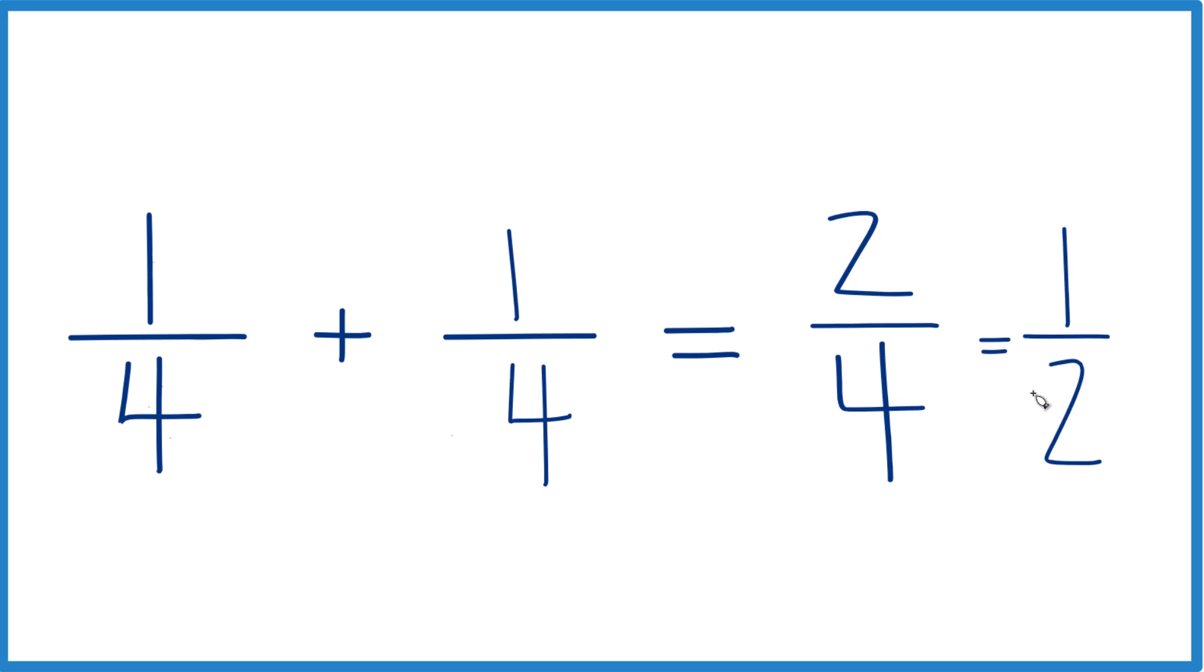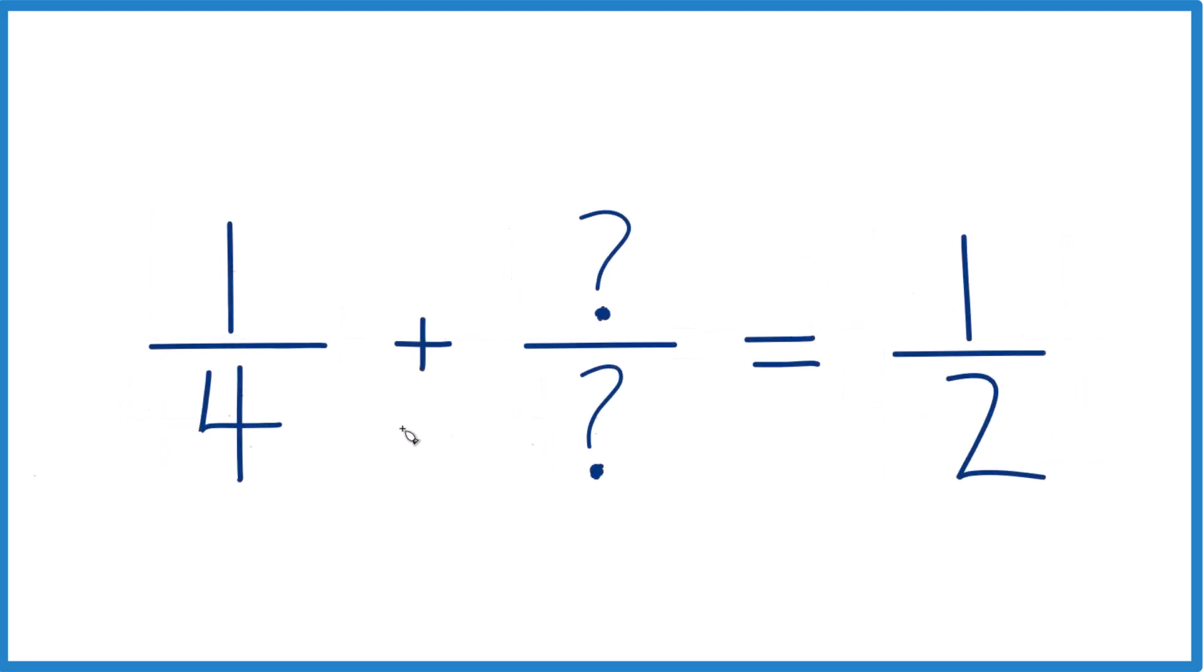You can also do it this way. You could take and subtract one-fourth from both sides. So if we had one-fourth here and we subtracted one-fourth, it would be zero.